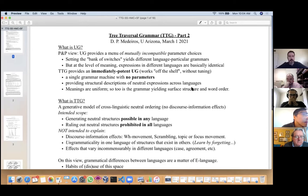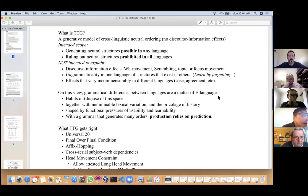Tree traversal grammar is a generative model of neutral word ordering across languages—neutral meaning we're setting aside discourse information. The intended scope is quite different than standard generative studies, where we're trying to generate neutral structures possible in any language while simultaneously ruling out the neutral structures prohibited in all languages, trying to capture word-order universals.